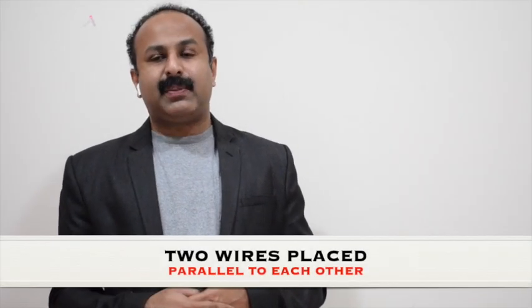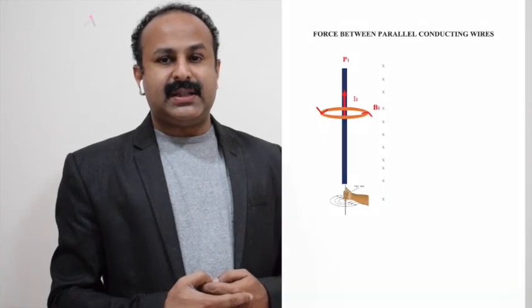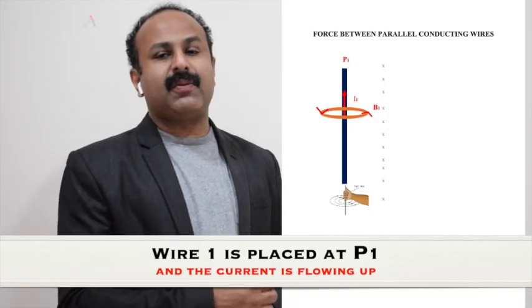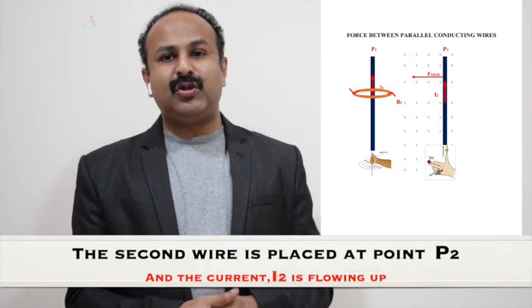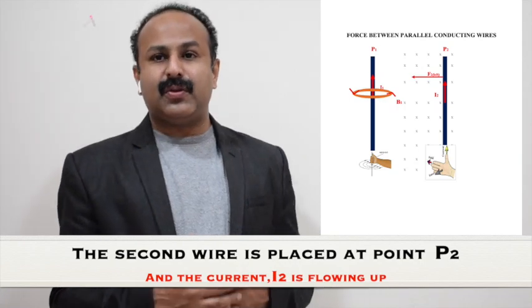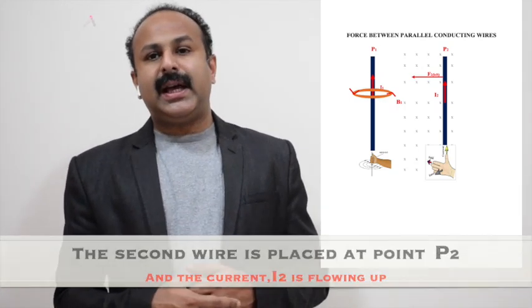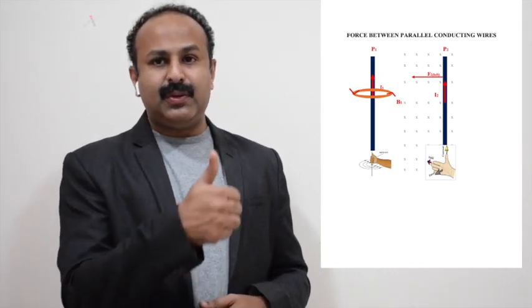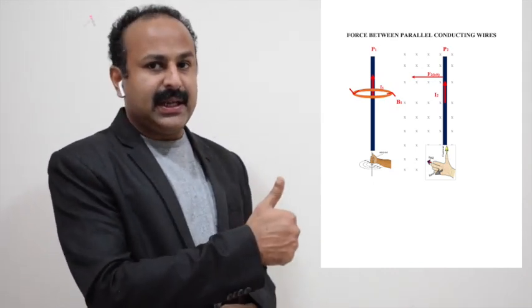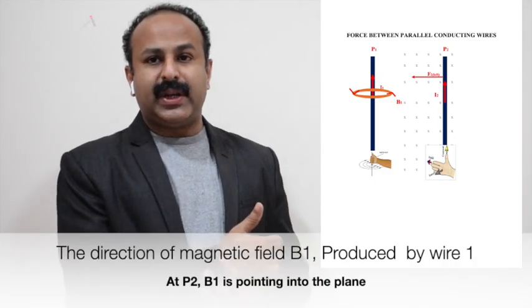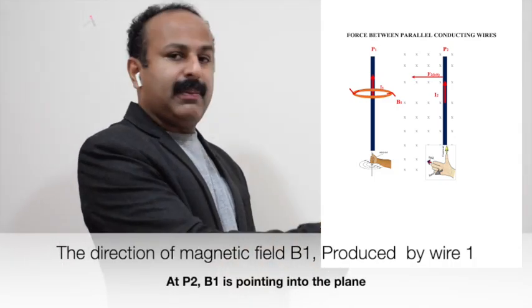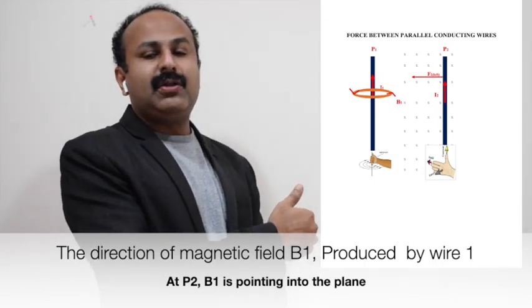In the first case we have two wires placed parallel to each other and the current flows in the same direction. The first wire is placed at point P1, let I1 be the current flowing through it, and the current flows upwards. The second wire is placed at point P2, let I2 be the current flowing through it, and I2 is also flowing upwards. Using the right hand rule, the direction of magnetic field produced by wire 1 at point P2 is pointing into the plane of the paper.